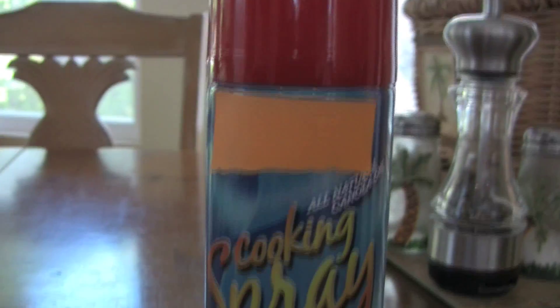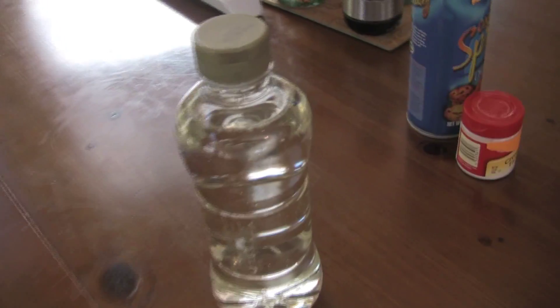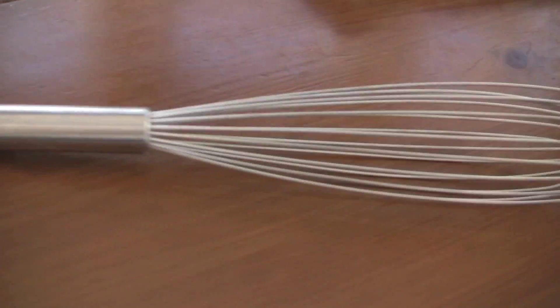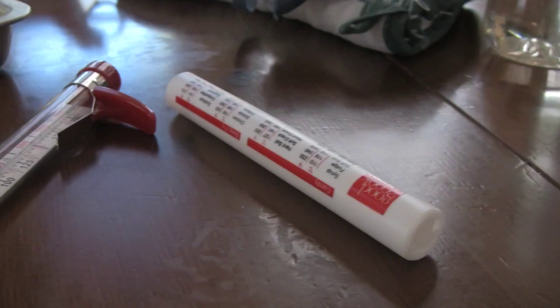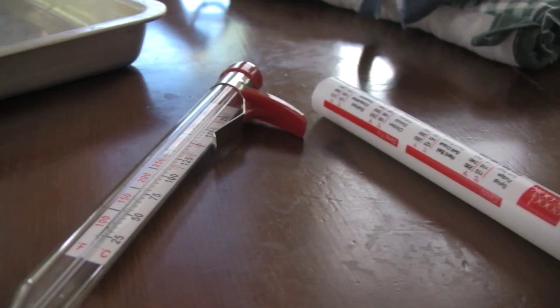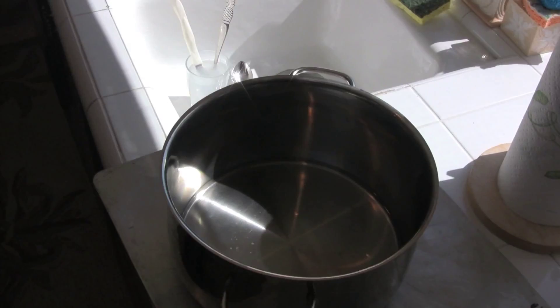cooking spray, light corn syrup, oven mitts, a cookie tray, something to stir with, a pot and stove, a candy thermometer, and water.